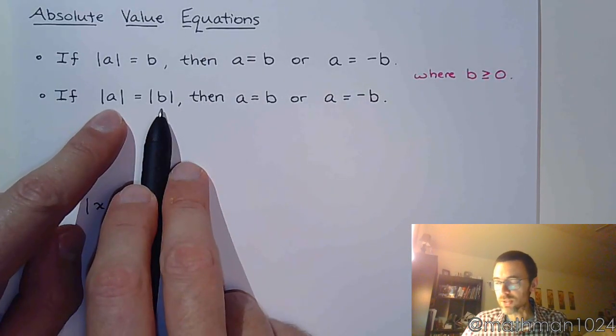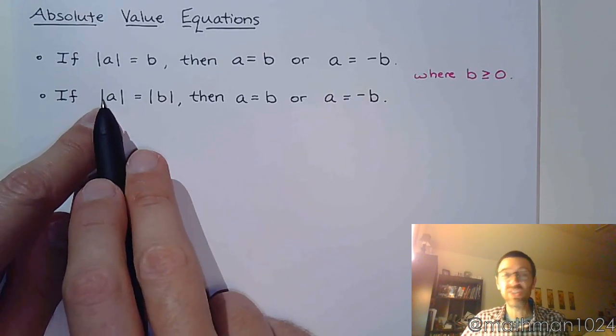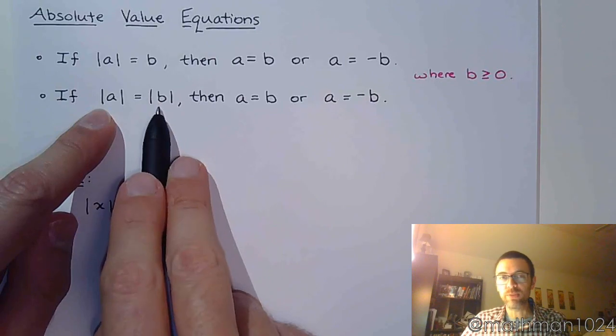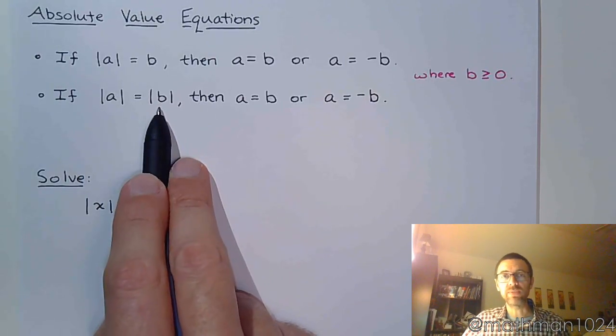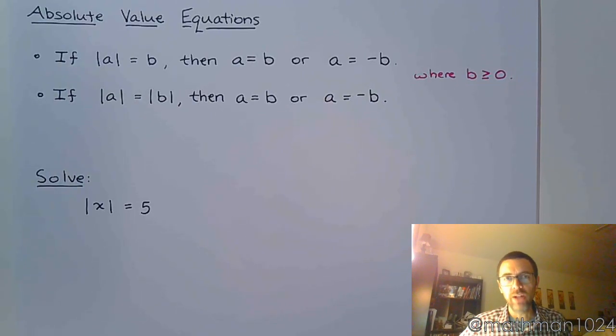Remember, absolute value measures distance, so if this were the absolute value of seven, then this would have to be the absolute value of seven or negative seven, because they would both be seven units away from zero. Absolute value always returns a non-negative value. It doesn't change the sign of what's inside, it just returns the positive value of that.